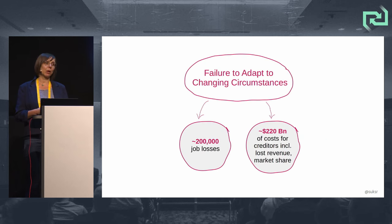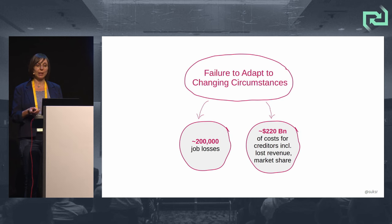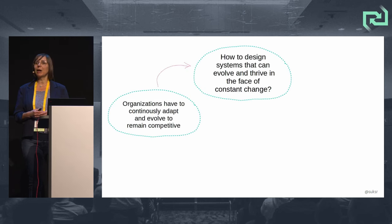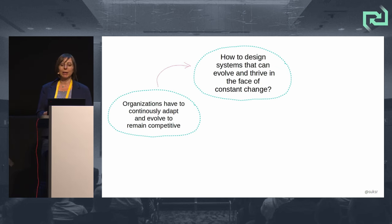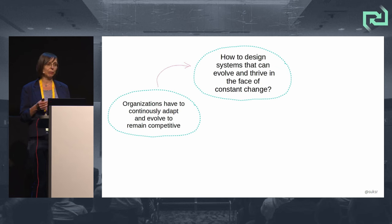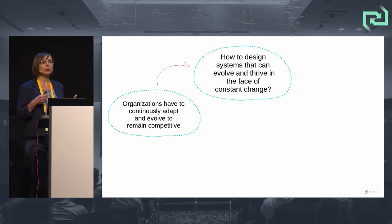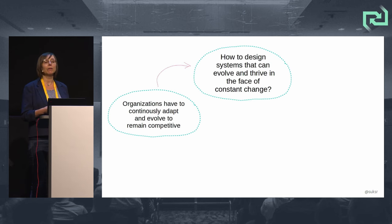They were forced to file for bankruptcy or sell their core business, which led to massive job and financial losses not only in the US but also worldwide. In today's fast-paced business environment, it's essential for organizations to continuously adapt and evolve to remain competitive and stay relevant in the market. The question is: how do you design and build a system that can evolve and thrive in the face of constant change?